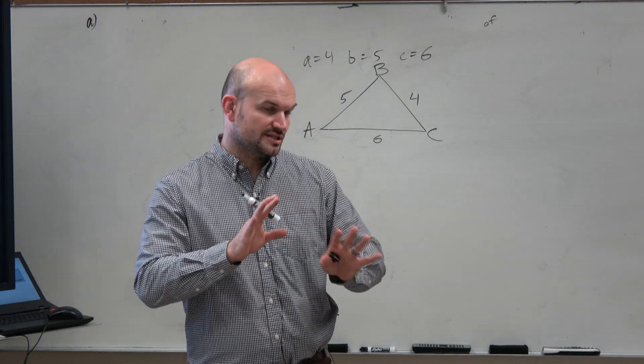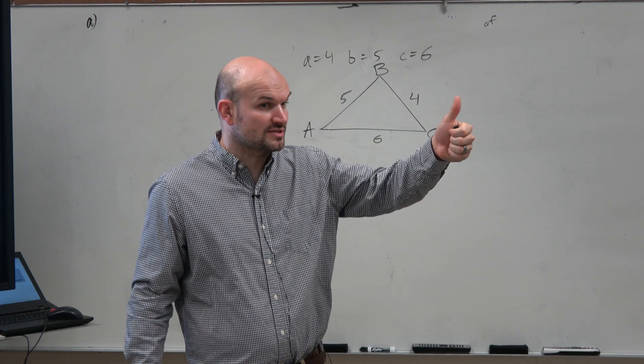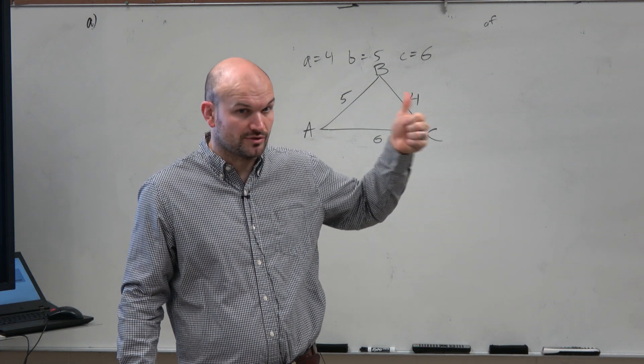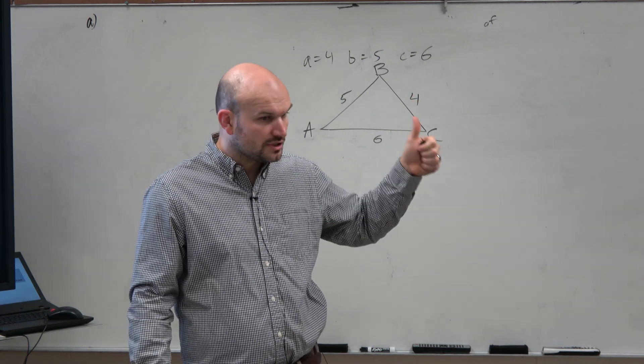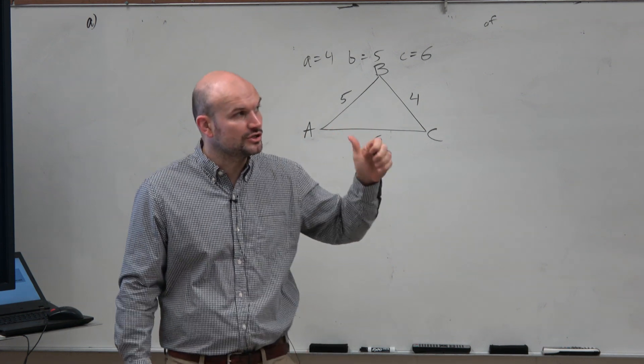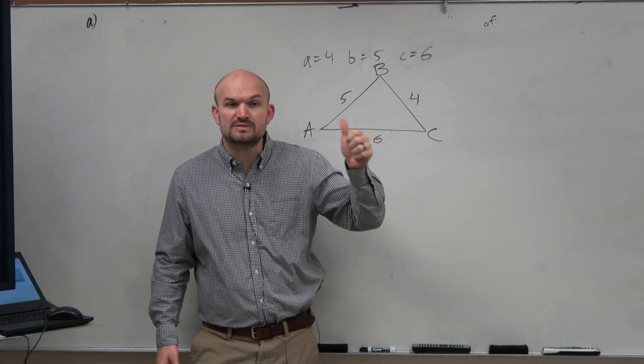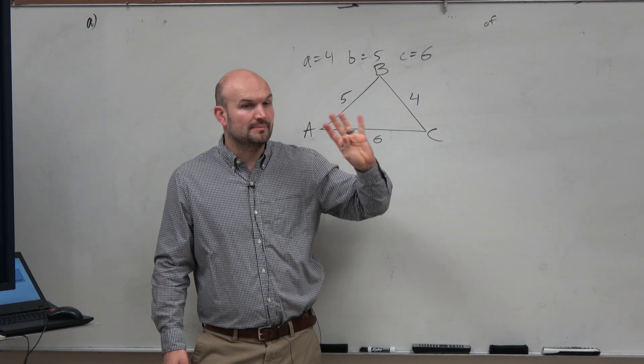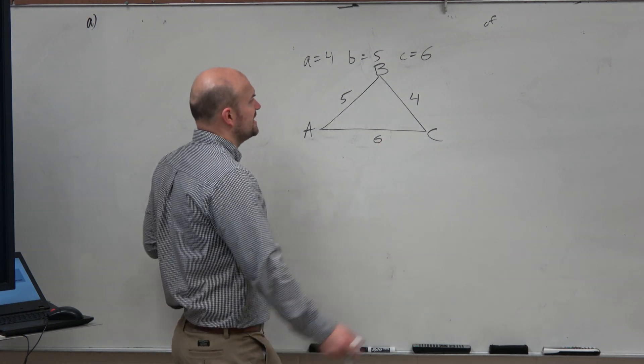So what we need to do, or at least there's two ways to do it. You could always do the law of cosines, which is a great, accurate way to always do the problem. If you want to do the law of sines, just make sure you make sure that there is not an obtuse angle option. So how can we do that?